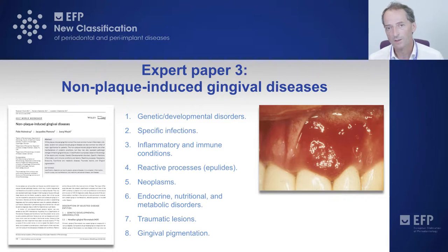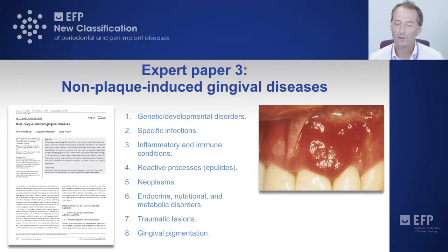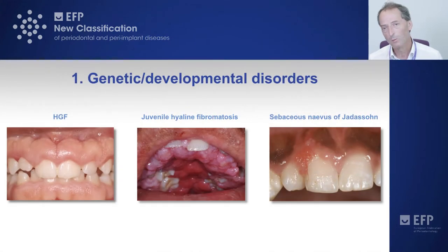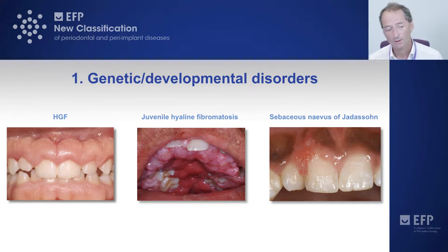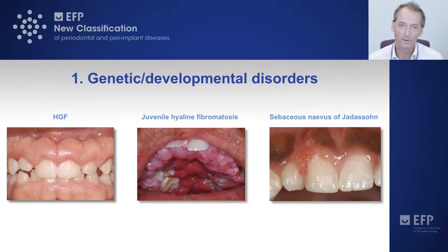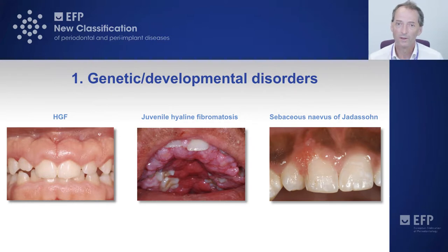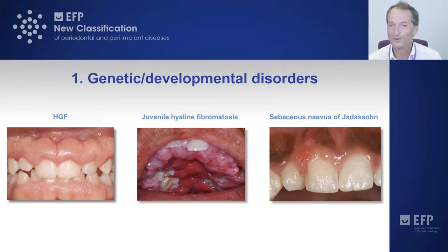I don't propose to go through these in detail because it's a huge area, and the authors did a fantastic job synthesising them. By way of some examples: some conditions are relatively common, such as HGF or hereditary gingival fibromatosis. This is a gene mutation in the son of sevenless 1 or 2 genes, giving rise to a fibrotic thickening and enlargement, classically in the maxillary tuberosities or mandibular retromolar pad areas, but it can also manifest in the anterior regions quite commonly.